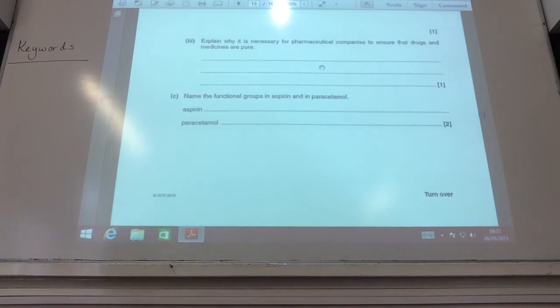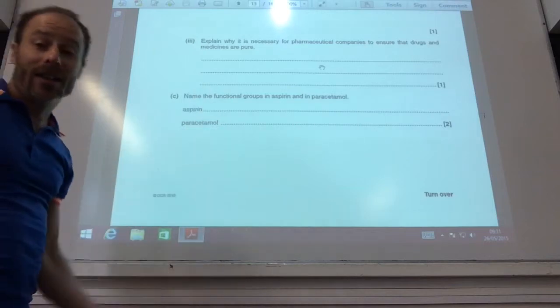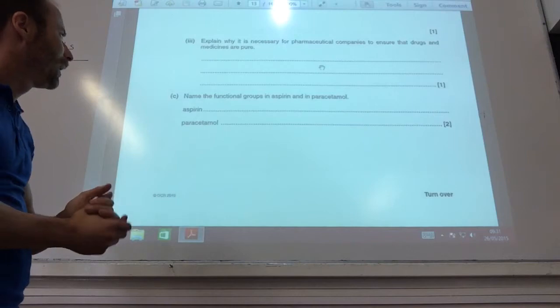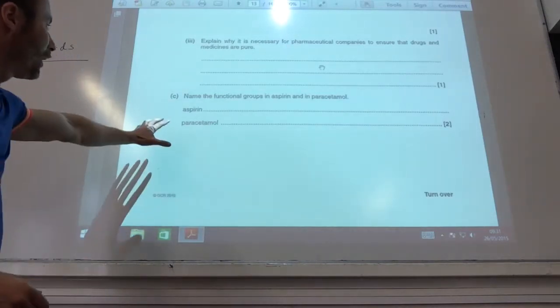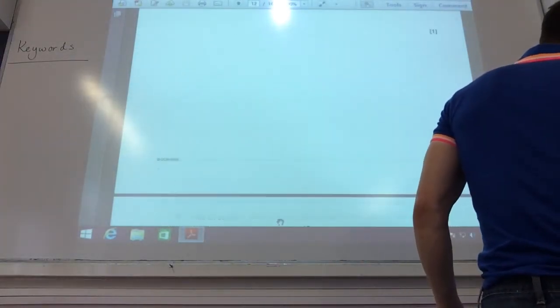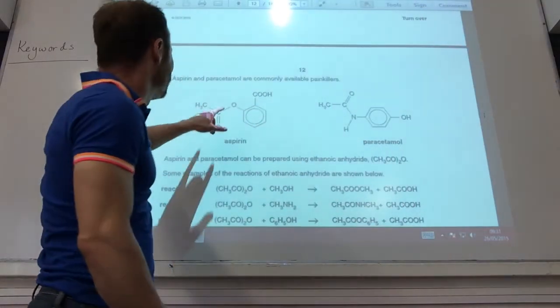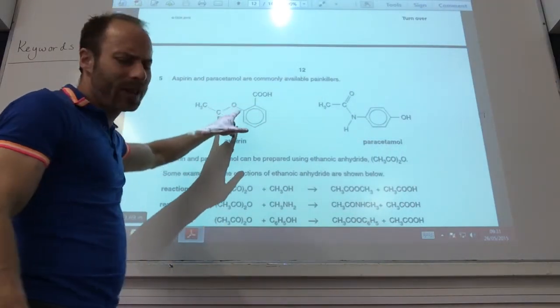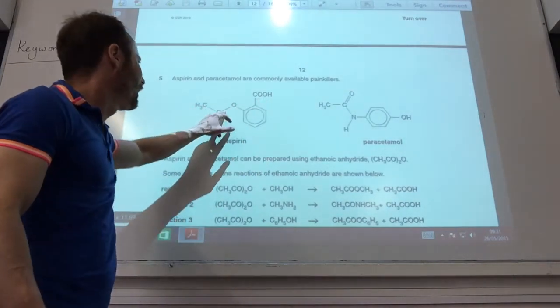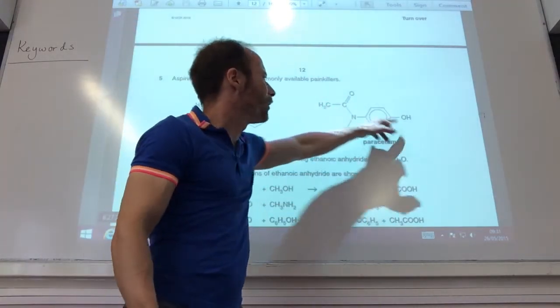Right, okay, so then a couple of things. Why is it necessary for pharmaceutical companies to ensure drugs and medicines do? Is to make sure there's no harmful side effects, which you may get if you take drugs which haven't been tested properly. Name the functional groups present in aspirin and paracetamol. Let's go back to the structures. So aspirin, kind of odd to do it now, but obviously aspirin has got an ester group and a carboxylic acid there. Ester, carboxylic acid. Paracetamol has got an amide group and a phenol group.